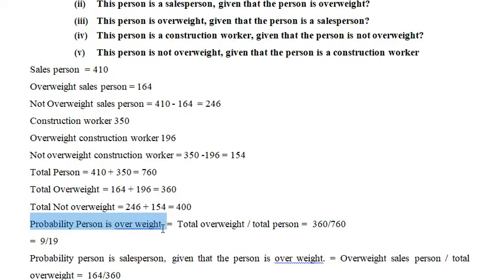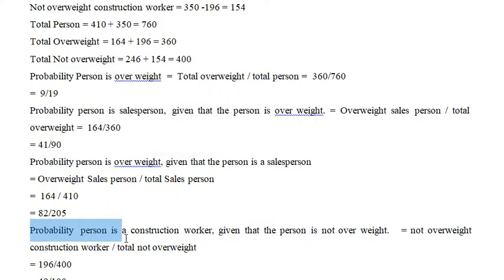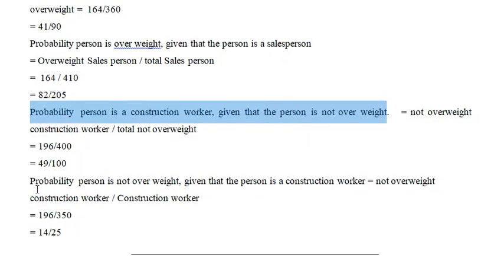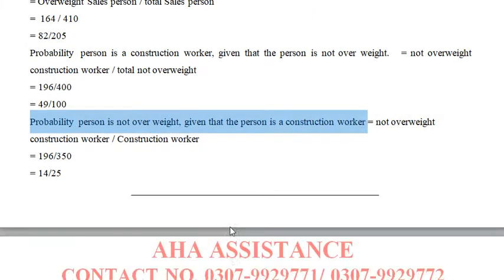First, the probability person is overweight. Then the probability person is a salesman given that person is overweight. Then the probability person is overweight given that person is a salesman. And the probability person is a construction worker given that person is not overweight. And last, the probability person is not overweight given that the person is a construction worker.